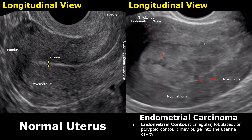This irregularity strongly indicates a malignancy and biopsy is very important to rule it out. Still, it is not always carcinoma, as in a few cases this can also be seen in endometrial hyperplasia, though it is less common — that is why biopsy is done to confirm the disease.